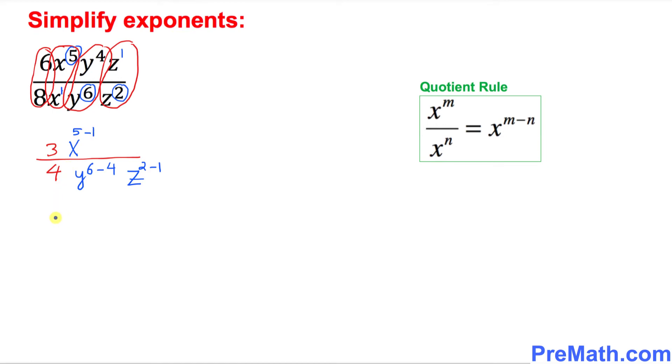So that's been taken care of. Let's simplify now. On the top, this is going to be simply 3 over 4 as far as these fractions are concerned. x power 5 minus 1 is 4, y power 2, z power 1—you can just leave z as z power 1. And that is our complete answer.